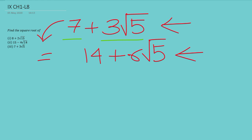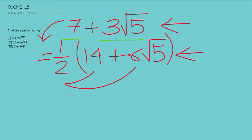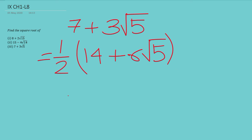To make them equal we put a half outside: half × (14 + 6 root 5). Because half × 14 = 7 and half × 6 = 3, we get back the original expression. So we are introducing a half and multiplying by 2 — that is simply multiplying by 2/2 = 1, so they cancel. We keep the half steady and continue with 14 + 6 root 5.